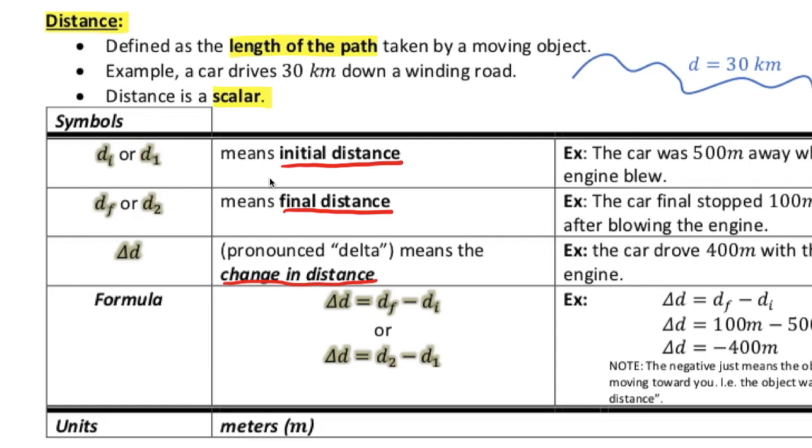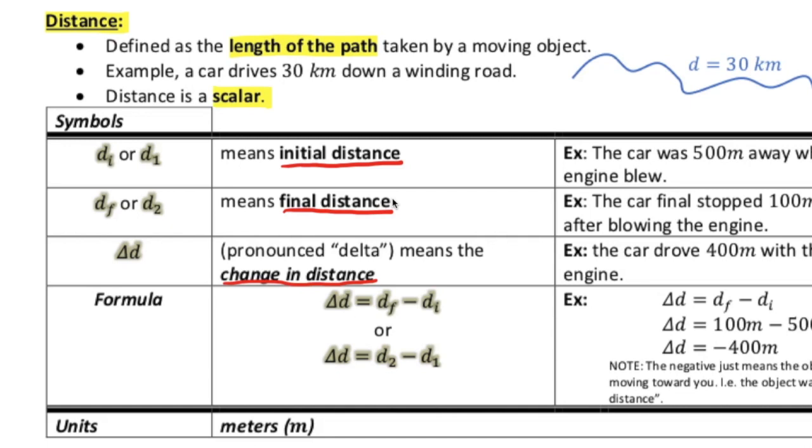So what does that mean? You know, initial distance versus our final distance. Well, in physics we often talk about how things change. So this is an example of an object in motion. Let's take a look over here.